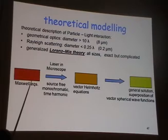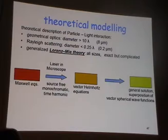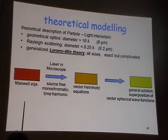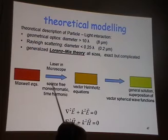What is happening is described in this pictorial. For large particles I use geometrical optics; for very small diameters I use ray-based scattering; and for all sizes I can use general Lorentz-Mie theory, which is exact but complicated. I have a Maxwell equation, my laser and microscope as a monochromatic wave, and a vector Helmholtz equation to solve. The general solution is a superposition of vector spherical wave functions.